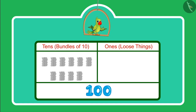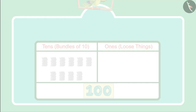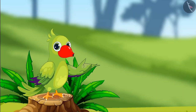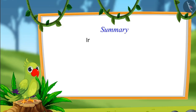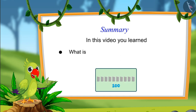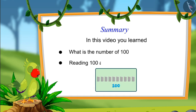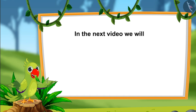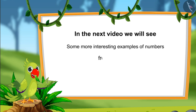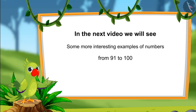So 100 comes after 99, which we write like this. So children, that was all for today. In this video, you learned about 100 and learned to read 100 as 1s and 10s. In the next video, we will see some more interesting examples of numbers from 91 to 100. Till then, bye children!